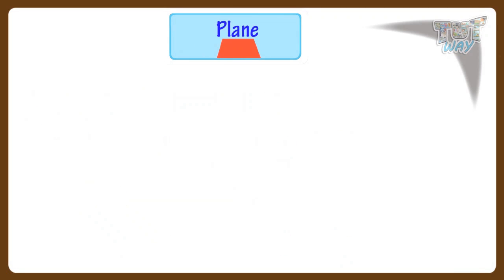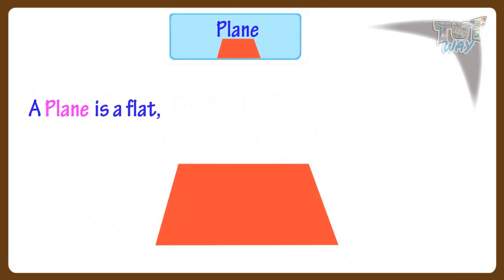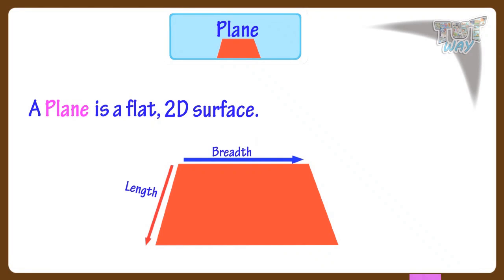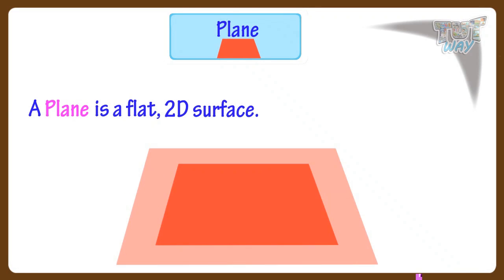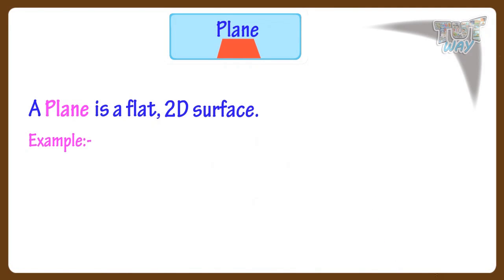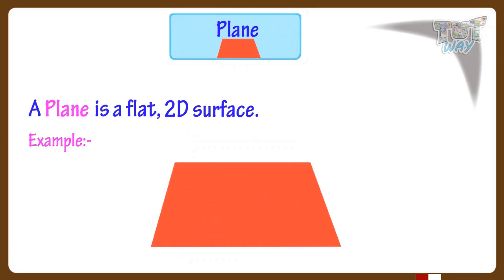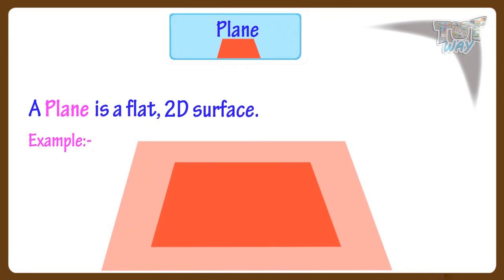Let's learn what is a plane. A plane is a flat, 2D surface. A plane is a surface that has only two dimensions — length and breadth — and a plane goes on forever in all directions. For example, if we are drawing something on a flat surface like paper, or a wall, or floor, we are drawing on a plane, which has only two dimensions: length and breadth. A flat surface that goes on forever is an example of a plane.